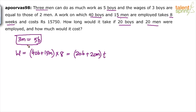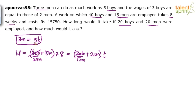You know that 3 men equals 5 boys, so replace. In both cases it will be easier to replace boys with men, because in both cases boys are multiples of 5. Either boys should be multiples of 5 or men should be multiples of 3. Men are multiples of 3 in the first part but not in the second part, so substitute boys in terms of men. If 5 boys are 3 men, 40 boys equals 24 men (multiply both sides by 8). Similarly, 20 boys equals 12 men.